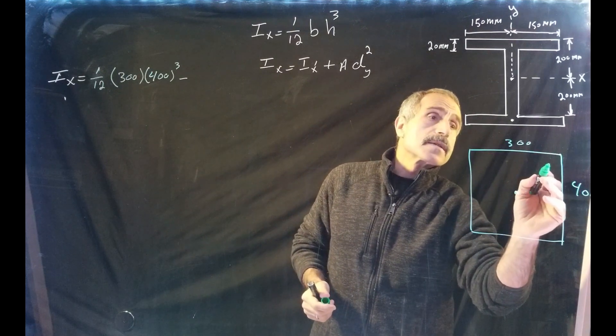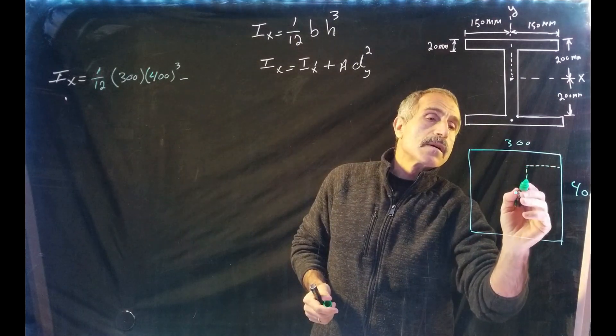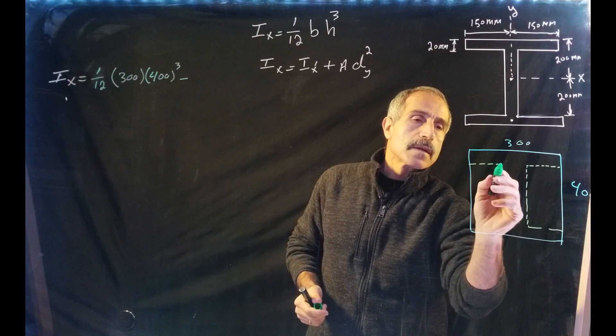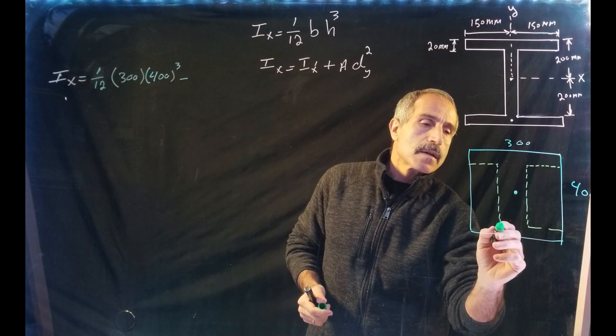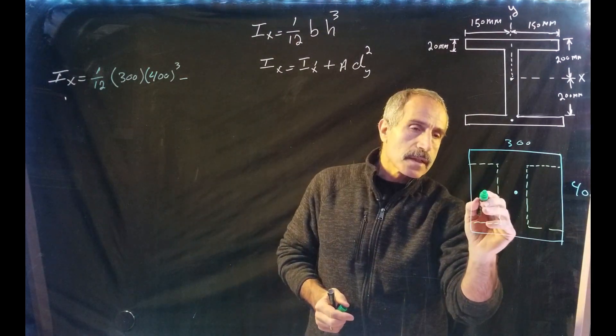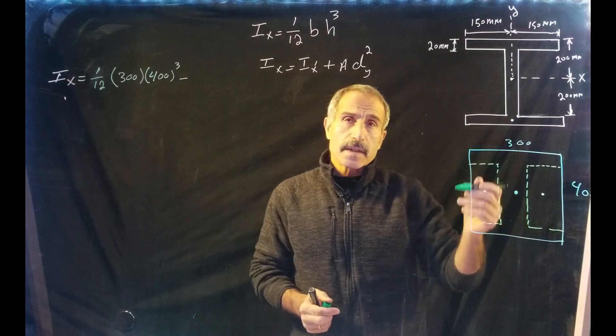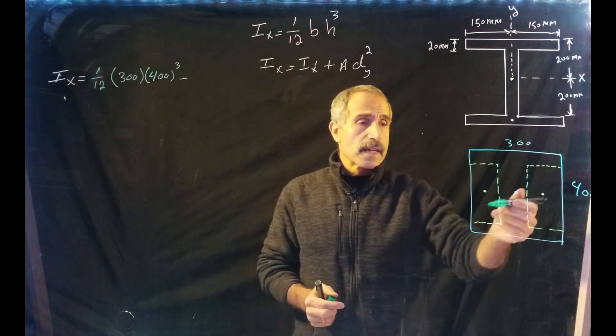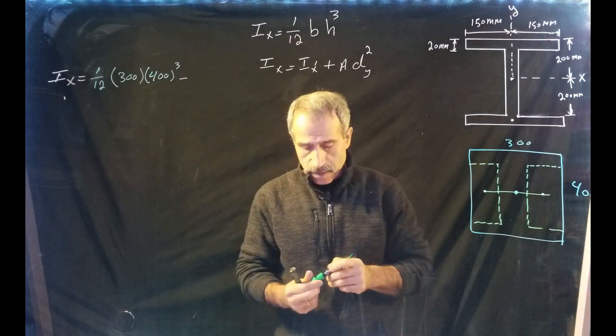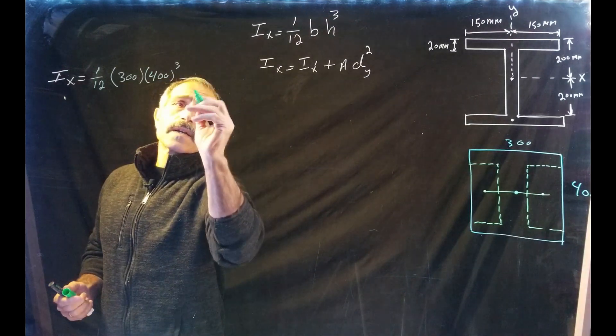So that would be like taking this segment out on both sides. And notice the centroid for this is right here, and the centroid for this is right here. So the distance dy in the y direction between all these three is zero. Okay, then we say that's minus two times.